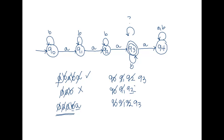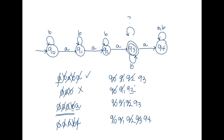Let's try AAABA one more time. I start in Q0, I read my A, I go to Q1. I read my next A, I go to Q2. I read a third A, I go to Q3. I read a B — B says stay in Q3. And then I read an A, this moves me to Q4. Now I'm out of string to read, and I'm in a non-final state, so I reject. And this is exactly what we wanted to see.